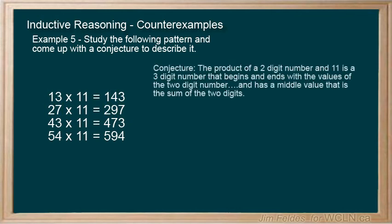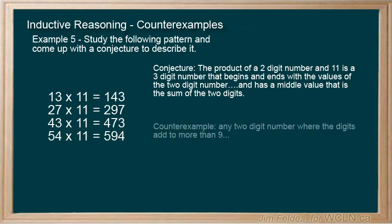The product of a two-digit number and 11 is a three-digit number that begins and ends with the values of the two-digit number, and has a middle value that is the sum of the two digits. Try some more values to see if it holds up for more two-digit numbers. It shouldn't take long to find a counter-example. Essentially, any two-digit number whose sum is greater than 9 will prove this conjecture wrong. In this counter-example, the product is 419, which we get if we carry the one to the first digit, like in traditional math. We could amend the conjecture or abandon it at this point.